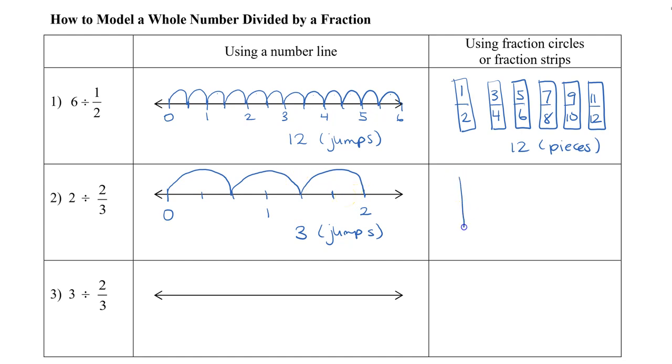Now how do we show that with the strips? So I'm going to draw 3 strips, and same as the number line, I'm going to divide this into thirds. And this time, let's think of this as chocolate bars. So let's say there's actually only 2 chocolate bars.